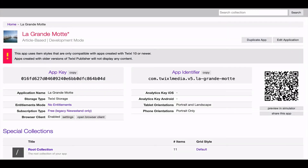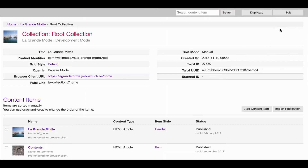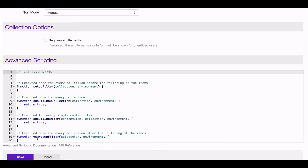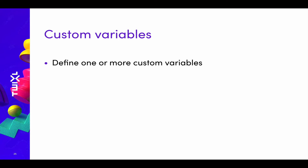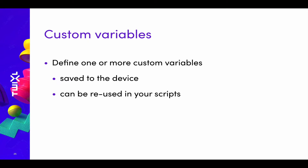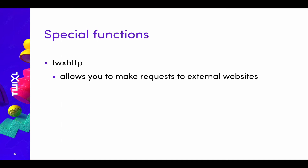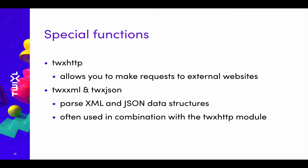Where do you define the advanced scripting? You go to a collection, edit it, and then you have access to the advanced scripting window where you can edit or paste your script. You also have links there to the documentation and the API reference. Custom variables are things you can save to the device and reuse later in your scripts. There are special functions we provide: TWX HTTP, which allows you to make requests to external websites; and TWX XML and TWX JSON, which allow you to parse XML and JSON data structures — often used in combination with the TWX HTTP module.